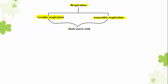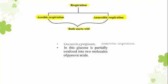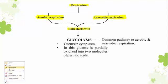Whether the respiration is aerobic or anaerobic, both of them start with a common step called glycolysis. So glycolysis is a common step observed in both aerobic respiration and anaerobic respiration — it is the common pathway. Glycolysis occurs in the cytoplasm, where glucose is oxidized into pyruvic acid.